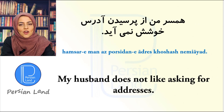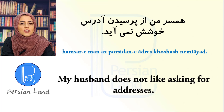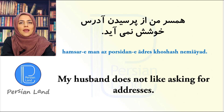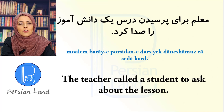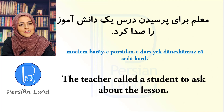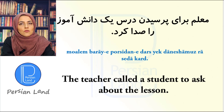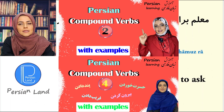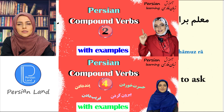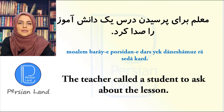همسر من از پرسیدن آدرس خوشش نمی آید. همسر من means 'my husband'. پرسیدن means 'asking'. خوش آمدن or خوش نیامدن means 'to like something'. معلم برای پرسیدن درس یک دانش آموز را صدا زد. صدا کردن and صدا زدن are the same. پرسیدن درس means 'to ask about the lesson'.